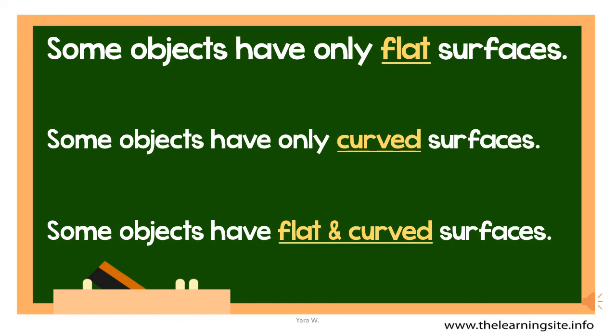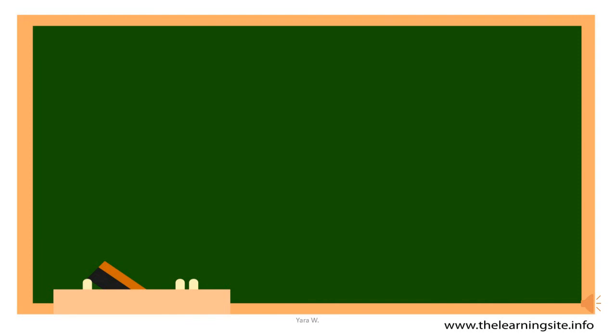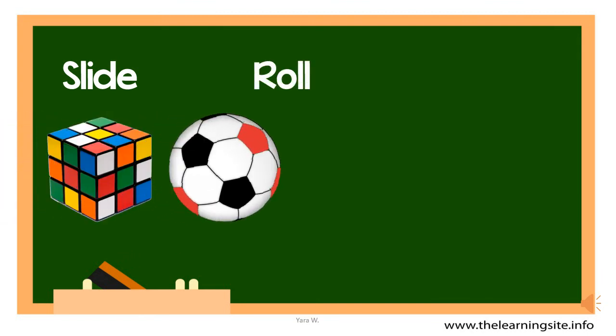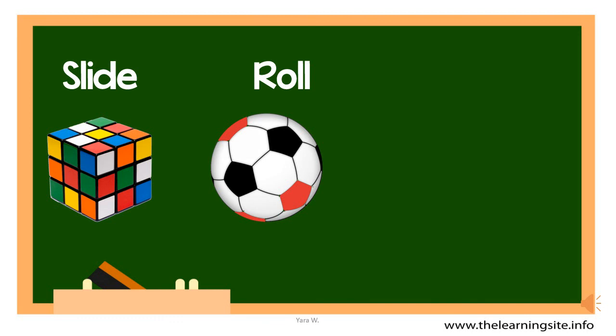In this lesson we will learn how these surfaces behave. Some surfaces will slide — this means they will move along with just the bottom surface touching the ground. It will not go around itself. Think of how you would move down a slide; you will not go around yourself. Some surfaces will roll, meaning they will move round and round. Think of how a ball moves when you kick it, or how a wheel moves on the ground — they go round and round.